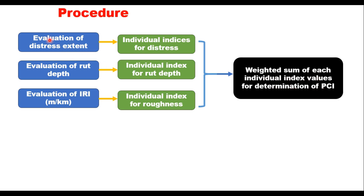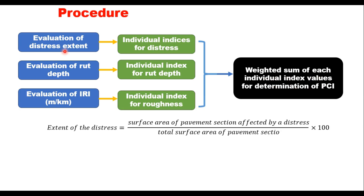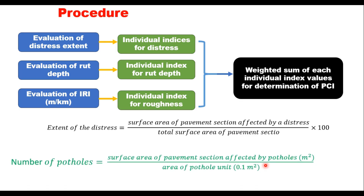Distress extent is estimated as: surface area of pavement section affected by a distress divided by total surface area of the pavement section, multiplied by 100. This applies to crack, raveling, or other distress parameters. The number of potholes is calculated as: surface area of pavement section affected by potholes (in square meters) divided by the area of a pothole unit, which is taken as 0.5 square meters.